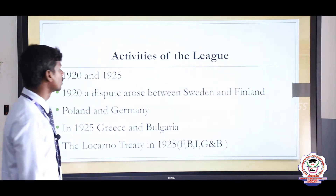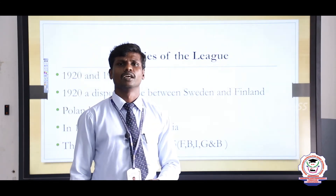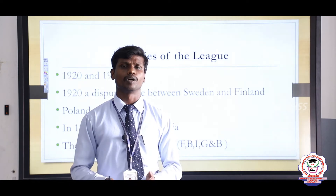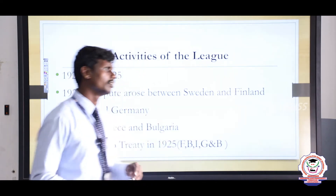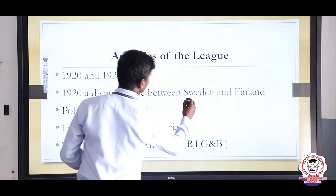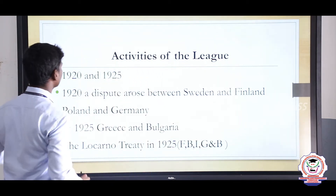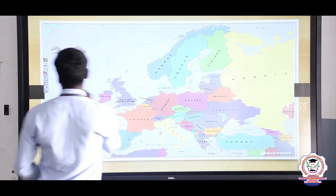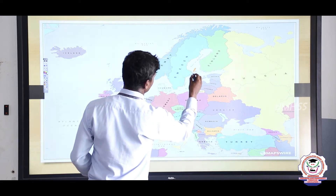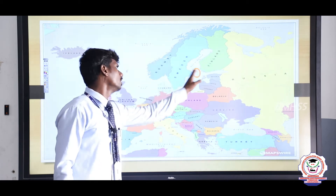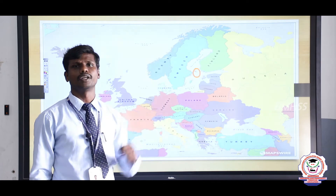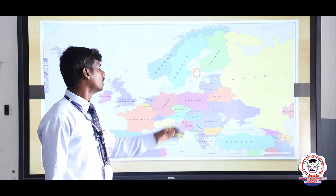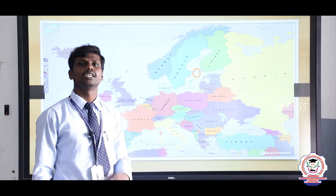Now the activities of the League of Nations. From 1920 to 1925 it worked very effectively and solved many problems. The first important problem was between Sweden and Finland, who both wanted to capture an island, showing their sovereignty over it. The League of Nations intervened and resolved the problem, giving judgment that the island should go to Finland.